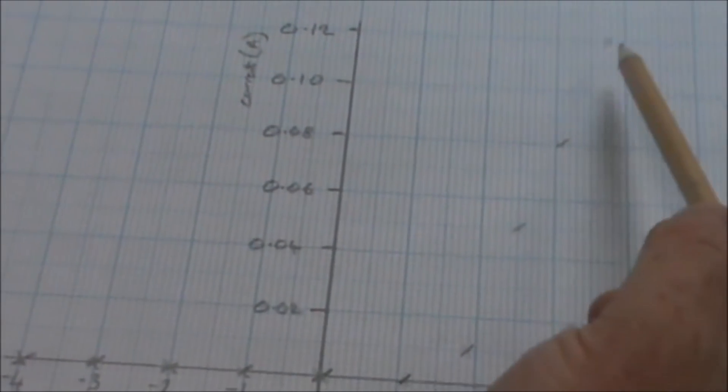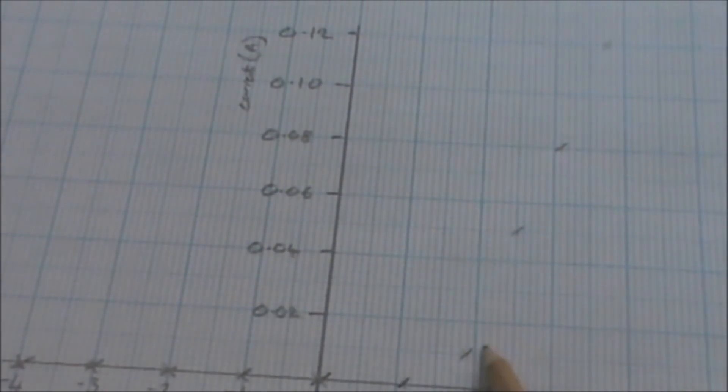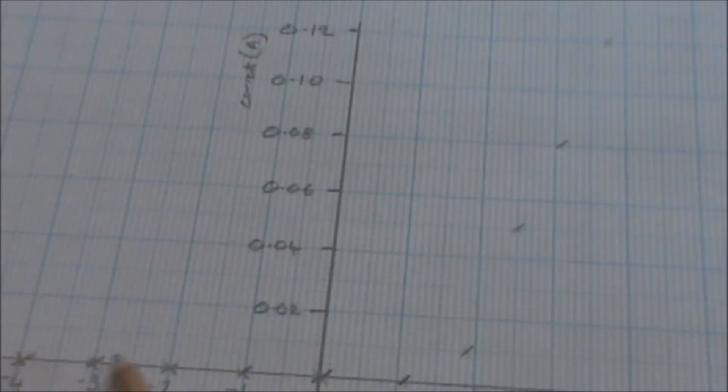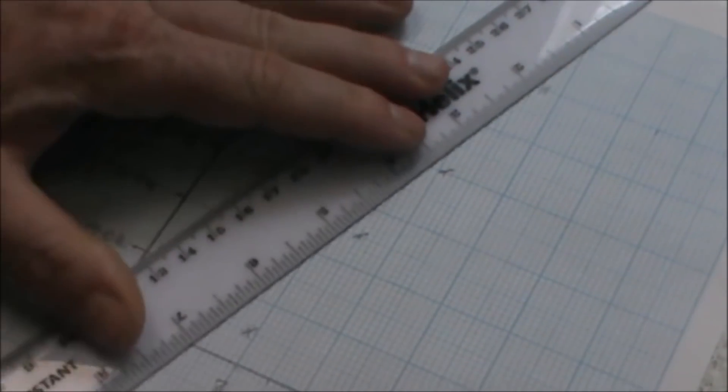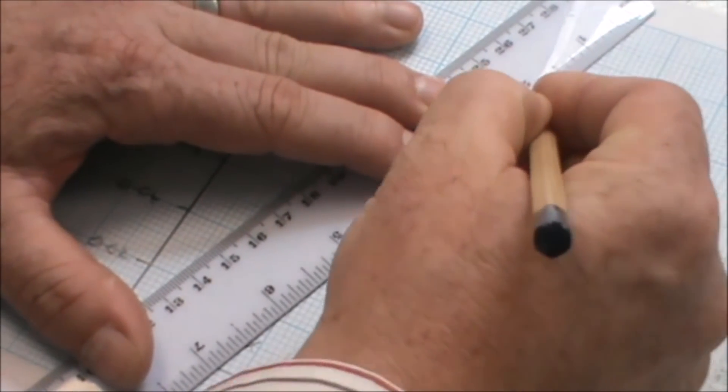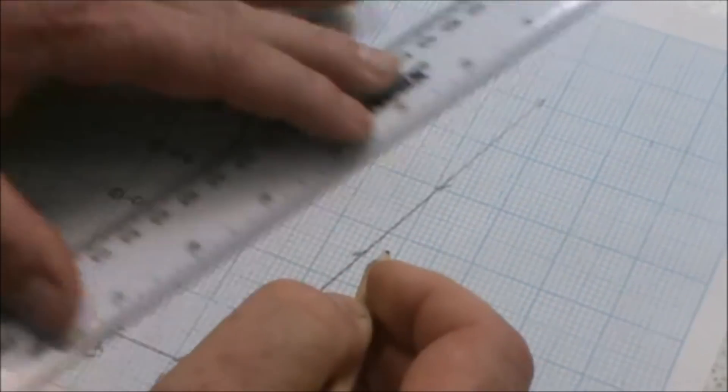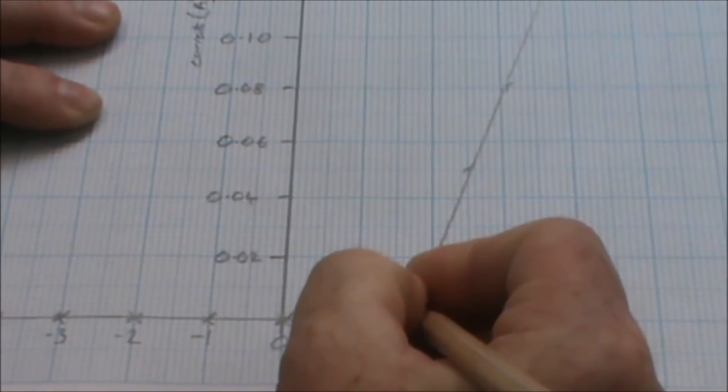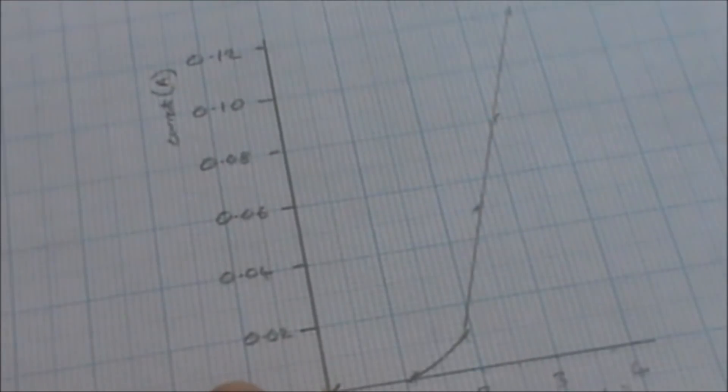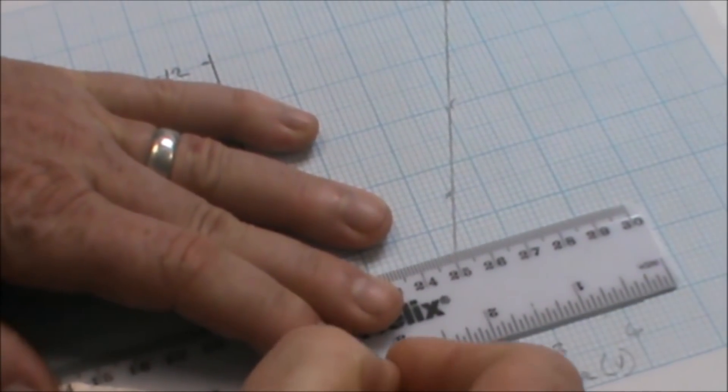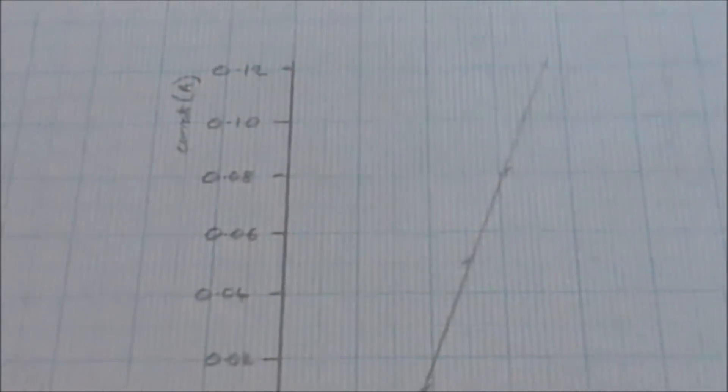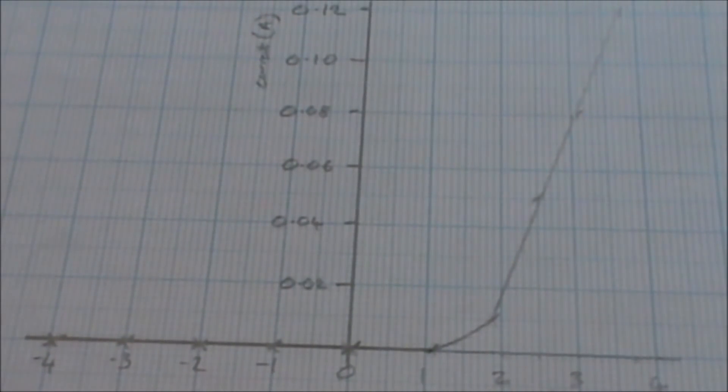So we can see we've got a line here curving down and then flat along the bottom. Let's add our line of best fit. This is a straight line here which then curves down to zero, and we go along there. That is the characteristic graph for a diode.